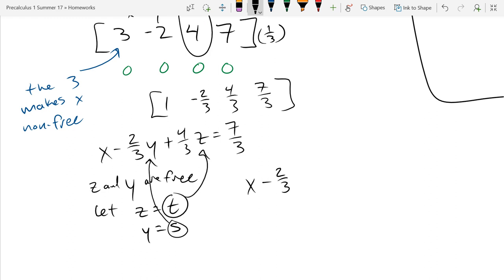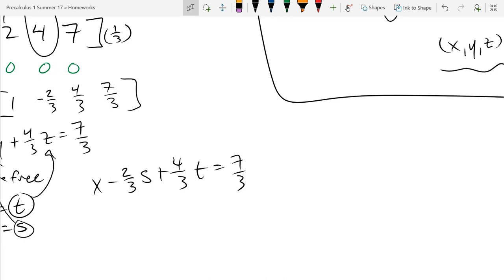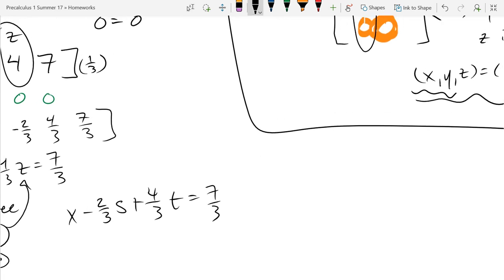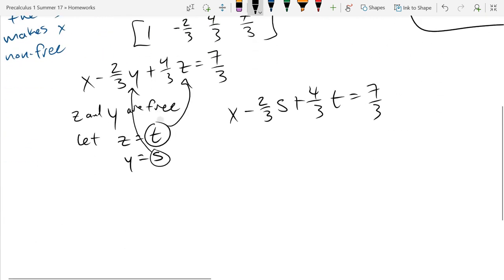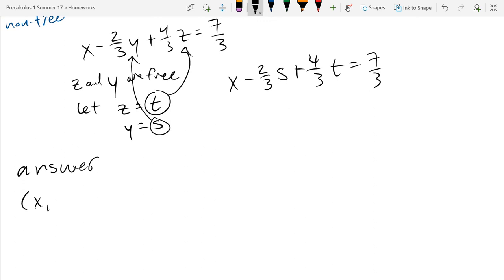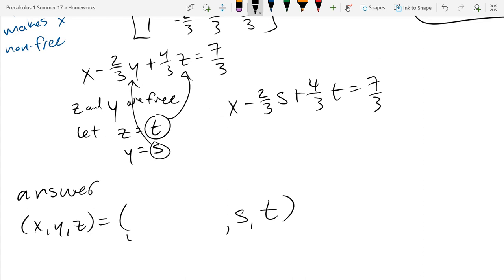That's 2 thirds s plus 4 thirds t equals 7 thirds. And remember what the answer is supposed to look like. The first part of the answer is supposed to look like x, y, z equals. So in this problem the hardest part is writing out your answer. Well I know y and z already. I'm going to leave a lot of space for x because it's going to need it. s comma t. So all I need to figure out what is x, what's going to go right here?